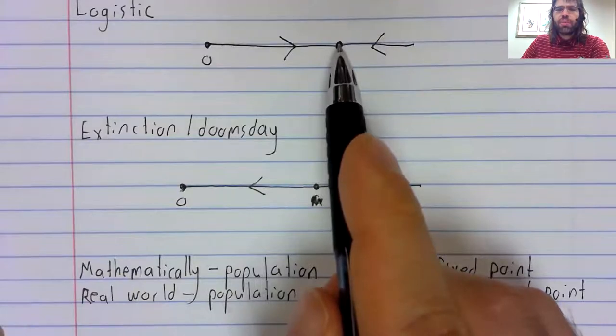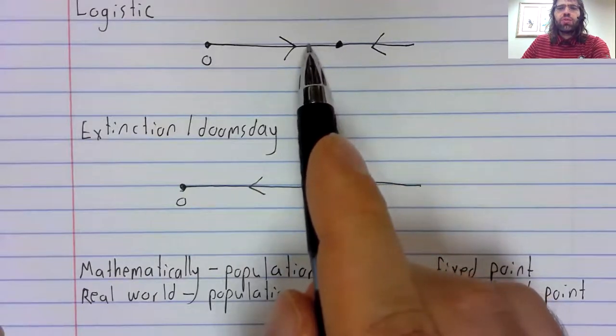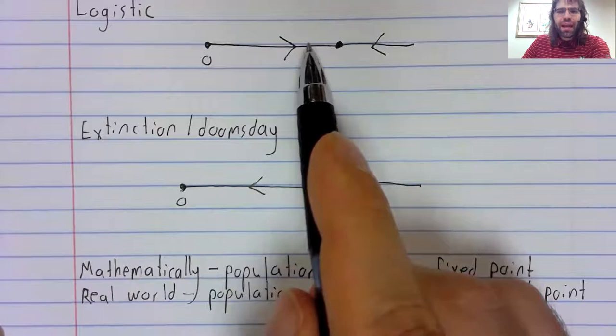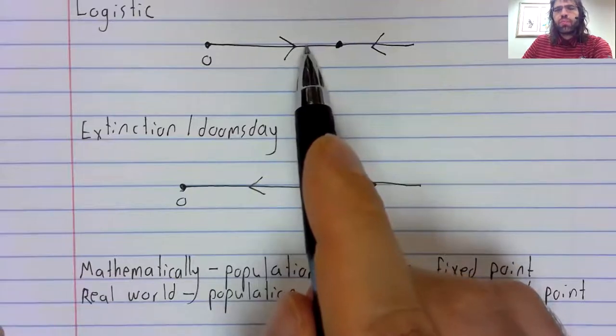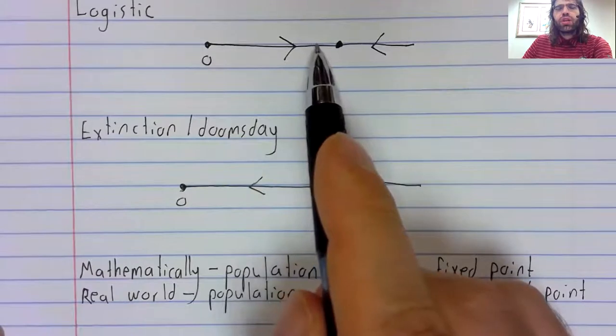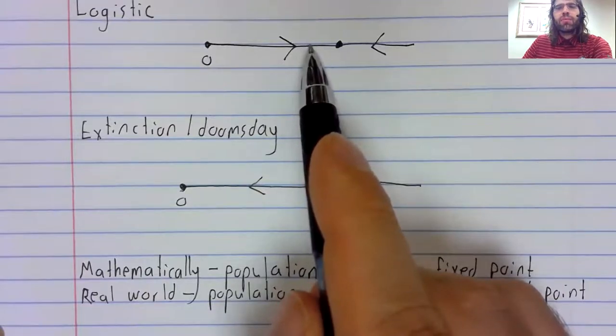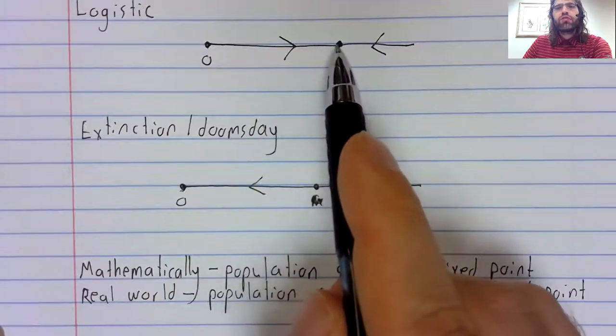is sitting around the carrying capacity when an unexpectedly harsh winter strikes, and suddenly this population goes down. Again, it's not predicted by the model, but it's clearly something that can happen. Well, the logistic model says that if our population is driven down unexpectedly by a harsh winter or an outbreak of disease or anything like that, the population will then rebound. Having been pushed down here by random factors, it will then go up to the carrying capacity.